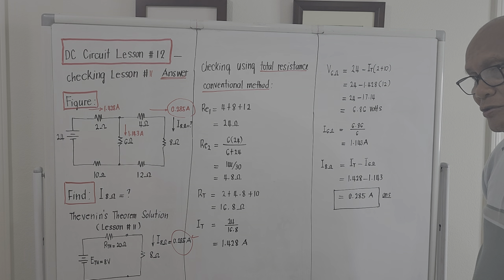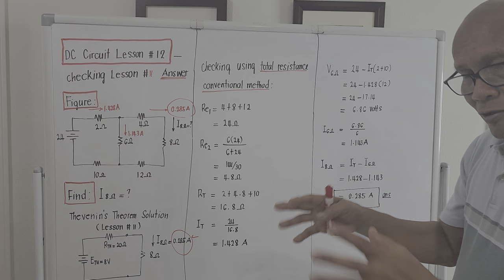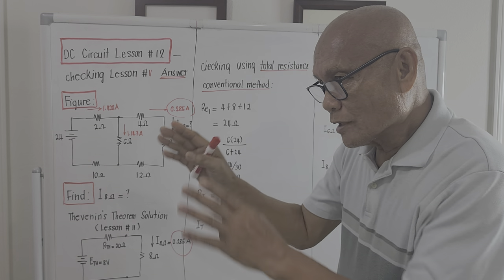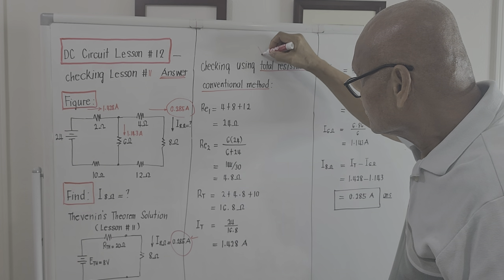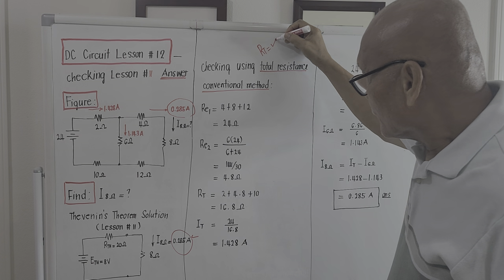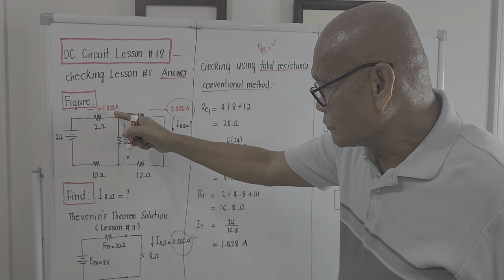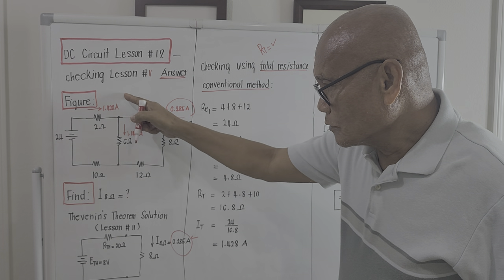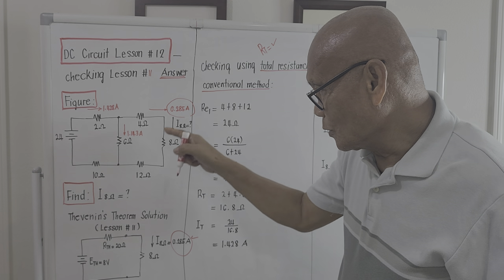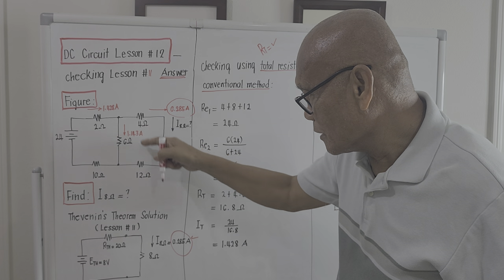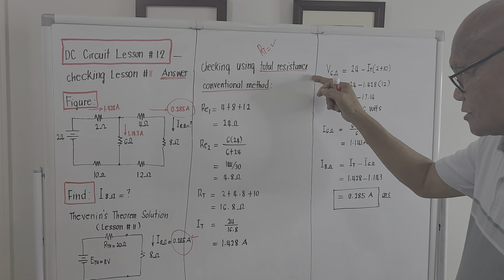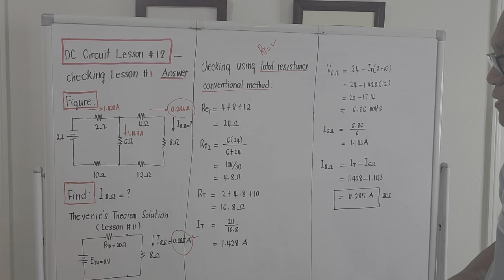To start the solution using the total resistance method, we'll simplify the given circuit first and compute for R total. If we can compute R total, we can compute I total. From I total, we can compute the current passing through the 6 ohm load, and the current through the 8 ohm load will simply be the difference. So we'll simplify the circuit step by step.